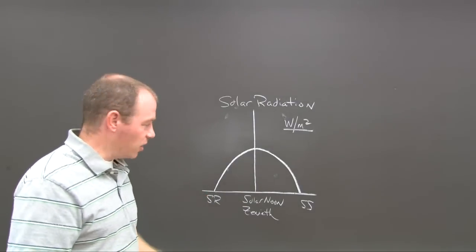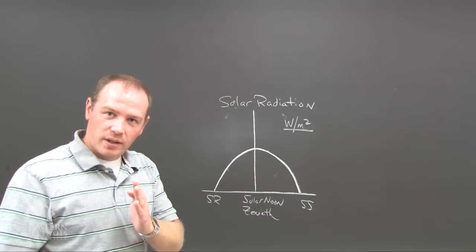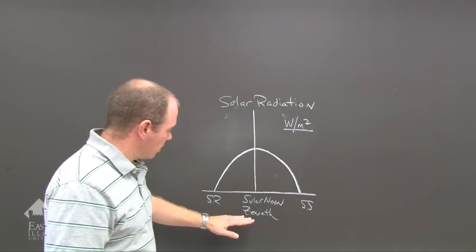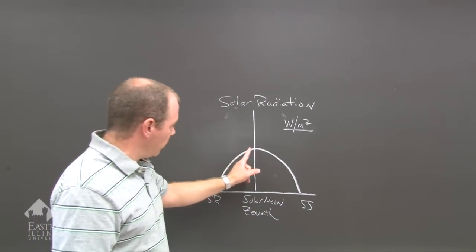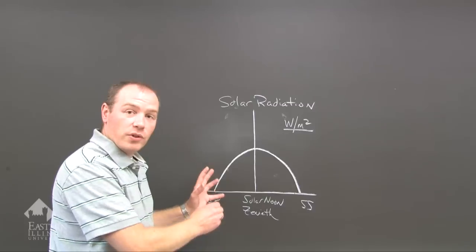a symmetrical curve indicating that when the sun rises, we start to accumulate that radiation. And then, once the sun reaches that midpoint in the sky, the highest point in the sky, the sun's zenith, then we start to decrease.